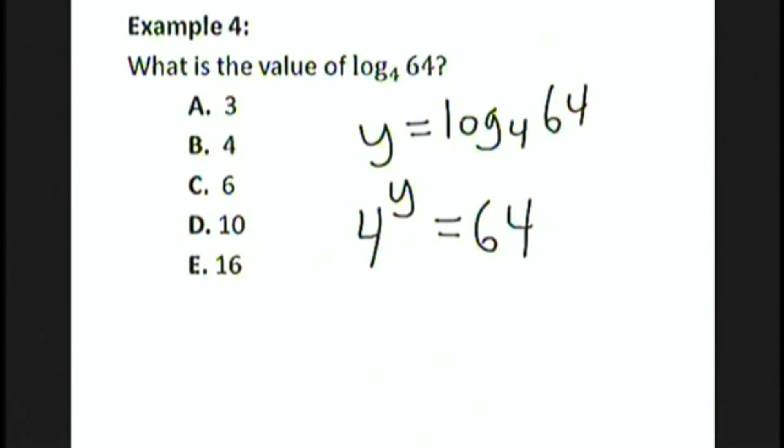Okay, now we just use some facts about exponential equations to finish solving this. 4 and 64 have a common base of 4. We can rewrite 64 as 4 to the third power. Now since the bases are the same, so are the exponents. So the answer is that log base 4 of 64 is equal to 3, choice A.